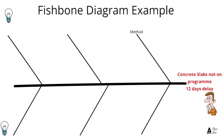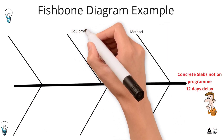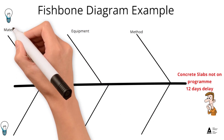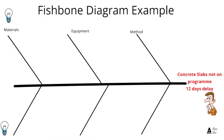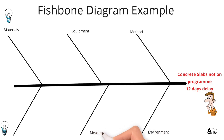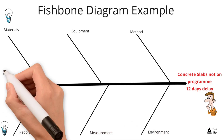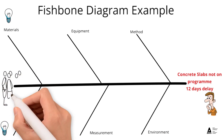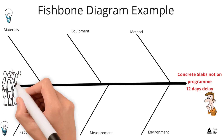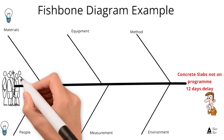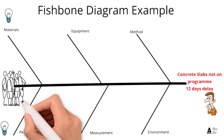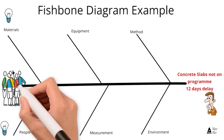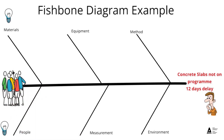The main categories are: methods, equipment, materials, environment — particularly regarding the weather — measurement, which could be quality, and people. All items feed into the fishbone diagram. It's very important that the people doing the work, the team, are actually involved to give up the ideas that are put on the whiteboard or schematic.